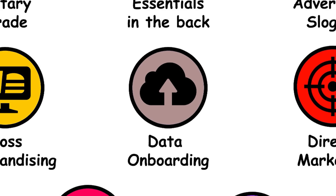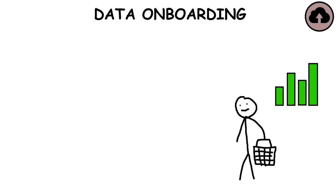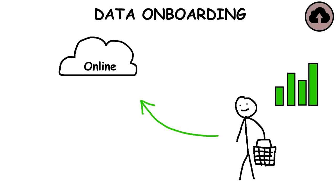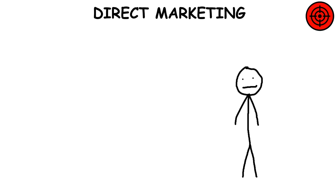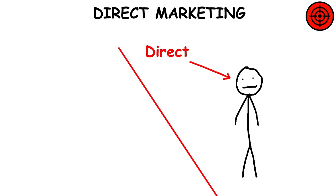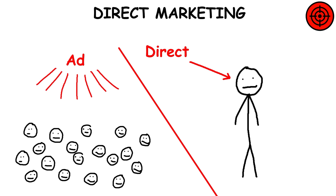Data Onboarding: The process of transferring offline data to the online environment for marketing purposes, connecting offline customer records with online users. Direct Marketing: Involves targeted communication to pre-selected customers, facilitating direct responses, in contrast to mass-message advertising.